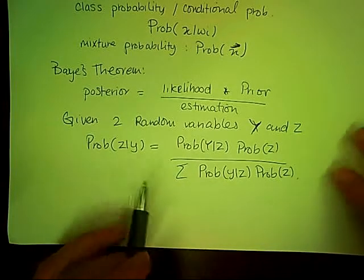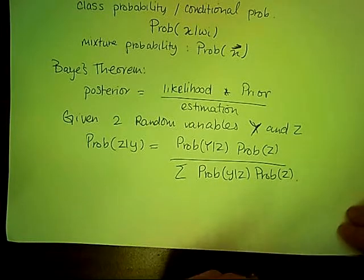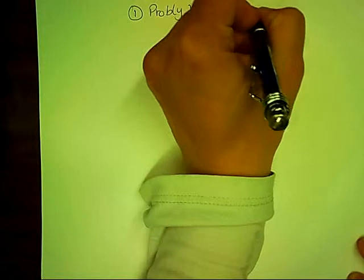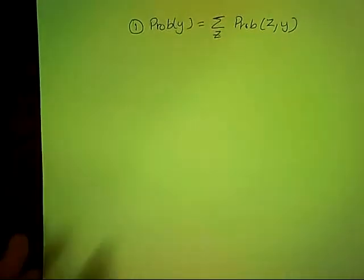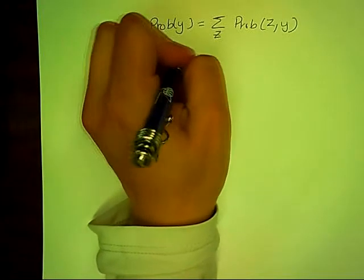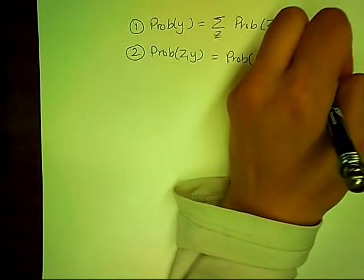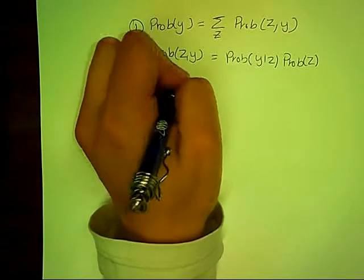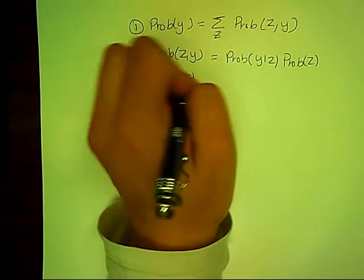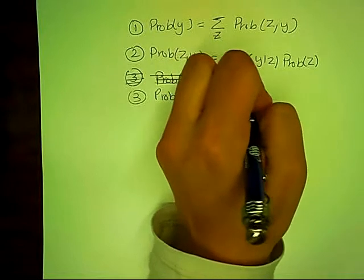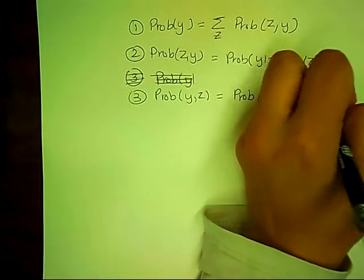To derive Bayes' rule from Bayes' theorem, we first need to define a set of properties. Property one: the probability of Y equals the summation over Z of the probability of Z and Y. Property two: the probability of Z and Y equals the probability of Y given Z times the probability of Z. Property three: the probability of Y and Z equals the probability of Z given Y times the probability of Y.